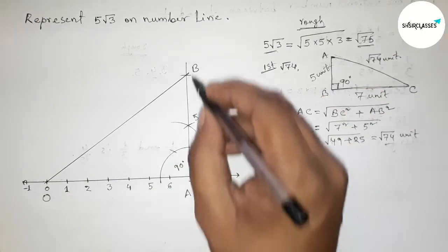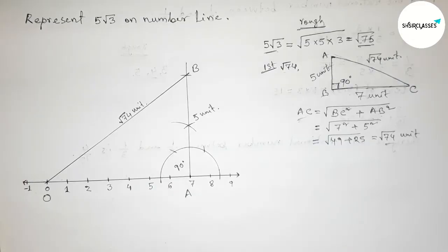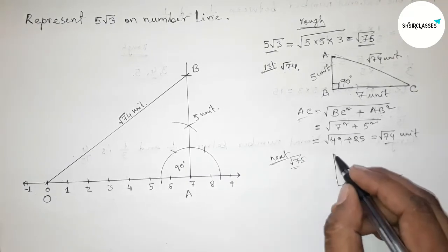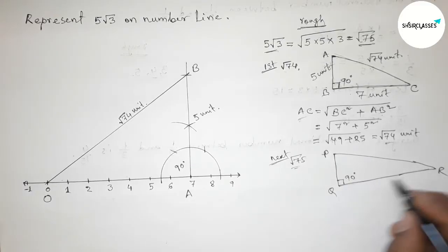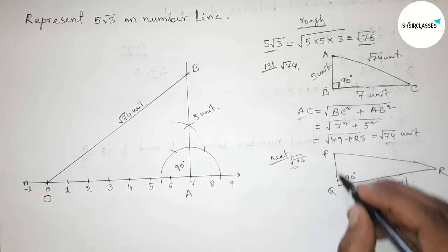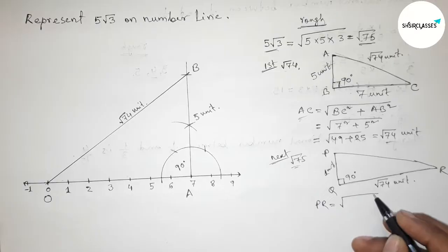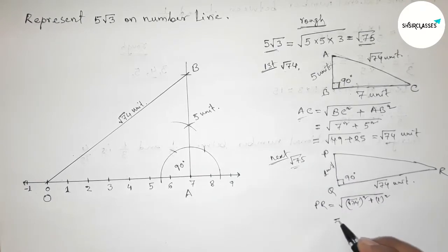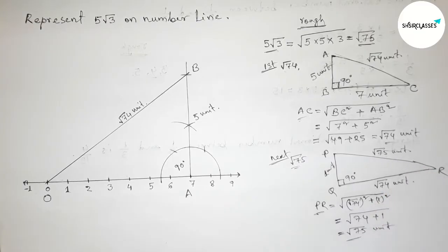Joining O and B, so OB equals √74 units. Next, to represent √75, roughly drawing a right angle triangle PQR with the 90° angle. Taking the base as √74 units and the perpendicular as 1 unit, the hypotenuse PR = √(√74² + 1²) = √(74 + 1) = √75 units.